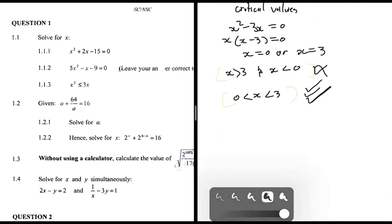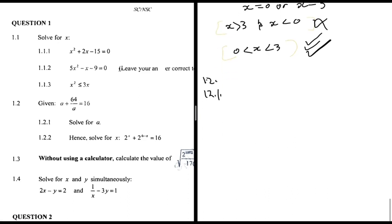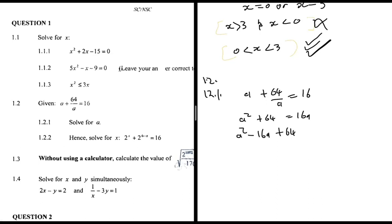For 1.2.1, solving for a: a + 64/a = 16. I don't like fractions, so I multiply everything by a to get a² + 64 = 16a. Rearranging: a² - 16a + 64 = 0.